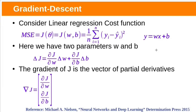To understand gradient descent, let us take a linear regression example. In our previous class we used a linear regression model with mean squared error. Let's see how weights are adjusted with the gradient descent algorithm. We need to minimize the mean squared error function. If we move in the direction of the gradient we will maximize that function, but our objective is to minimize the cost function, so we need to move in the opposite direction of the gradient. That's why we call it gradient descent.